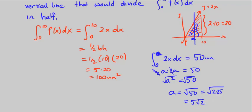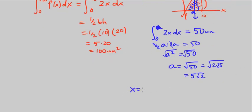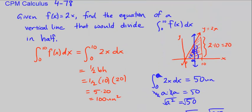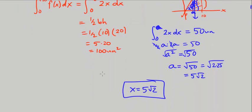If a is 5√2, then it's going to be the vertical line. The vertical line is just the x value: x = 5√2 is the vertical line right here, which produces the area 50 units.